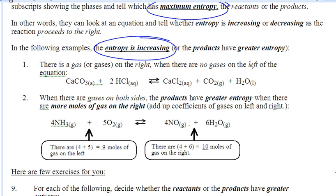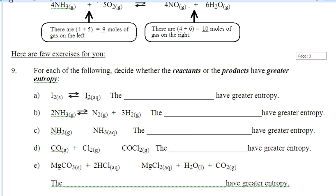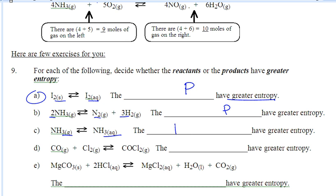So you're looking for examples like this: solid and aqueous to aqueous, gas, and liquid — that's an increasing entropy example. If you've got 9 moles of gas going to 10 moles of gas, 10 moles is more random than 9. All you're looking at are the subscripts — no tricks. In A, solid to aqueous — products have the greatest entropy. Two gases to 4 gases — products have greatest entropy. From a gas to an aqueous — reactants have greatest entropy. And 2 gases to 1 gas — the reactants have the greatest entropy.